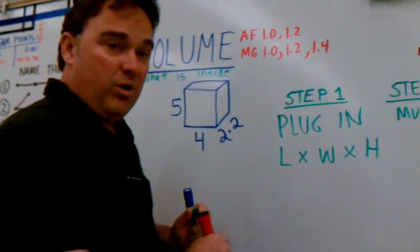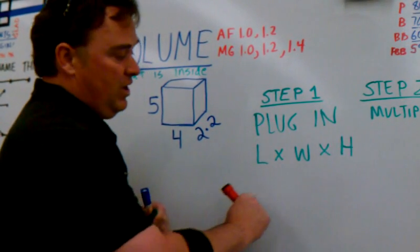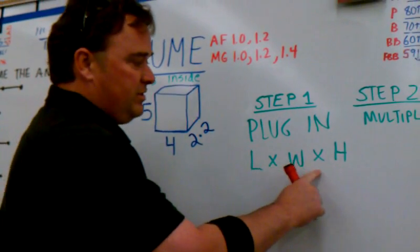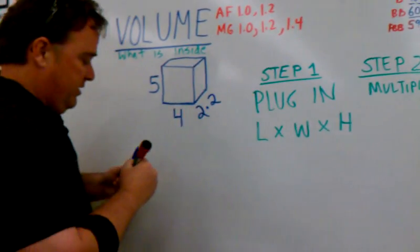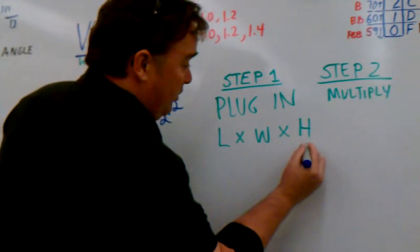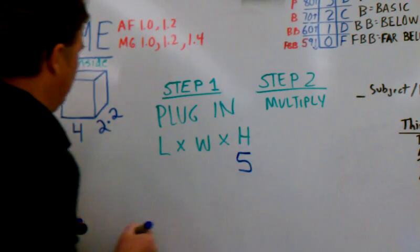So, right here on step number 1, we have to plug in the volume. The length times the width times the height. Well, let's plug that in. I'll use a different color so you guys can see at home. What's the width? 4, and we're going to 2.2.